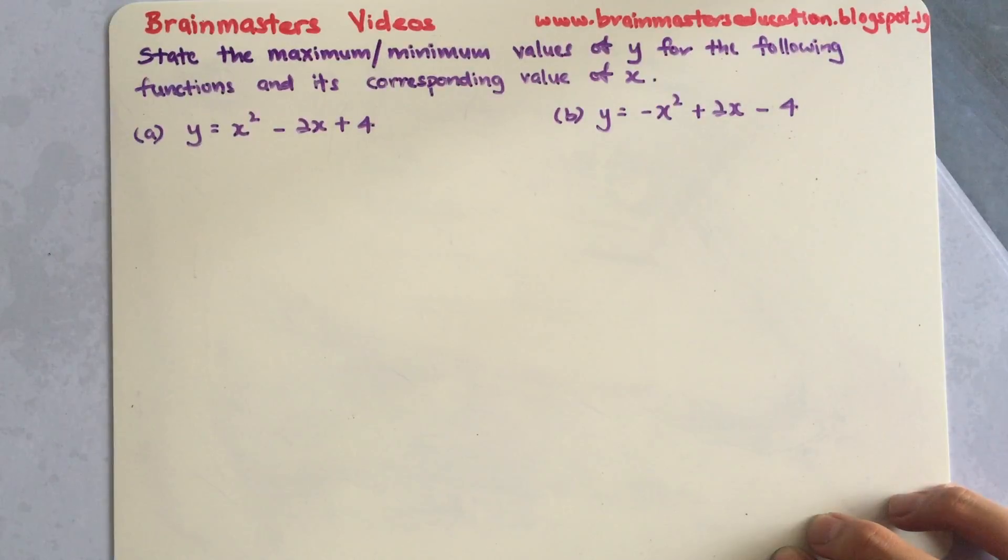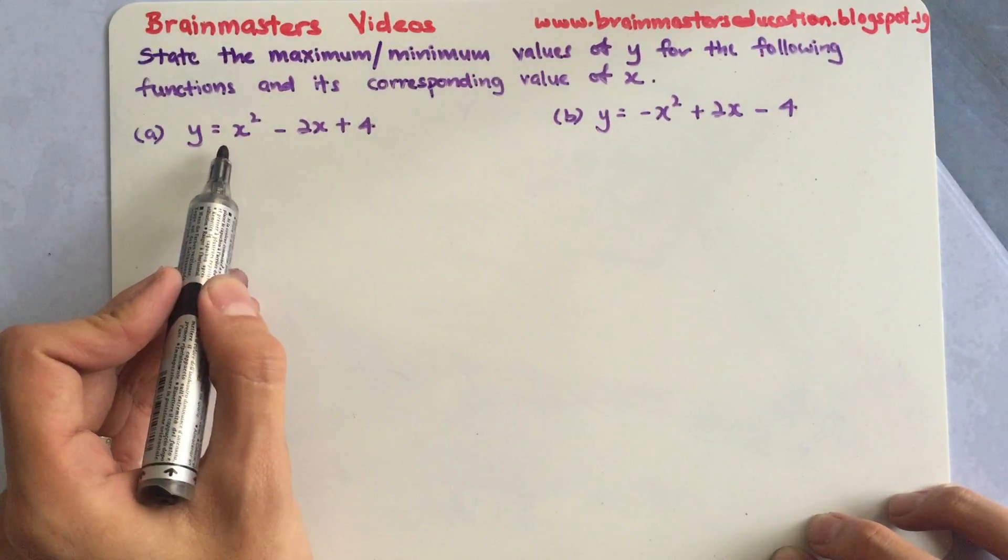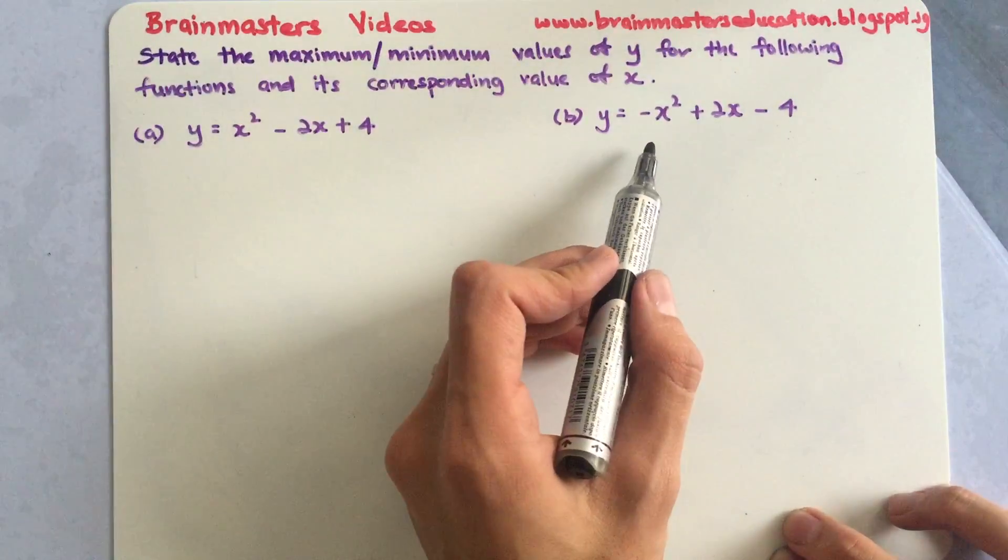Over here I have two questions that are quite similar. It's just that over here there is a negative. This is a positive graph and this is a negative.